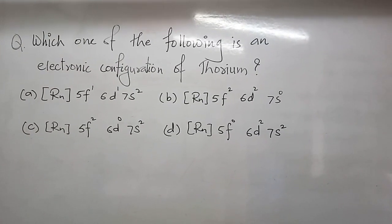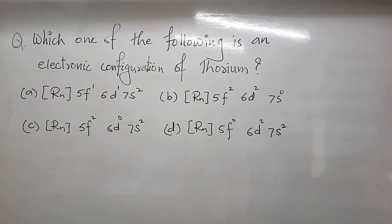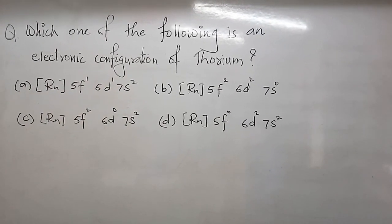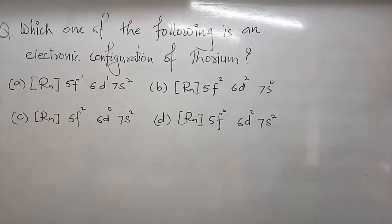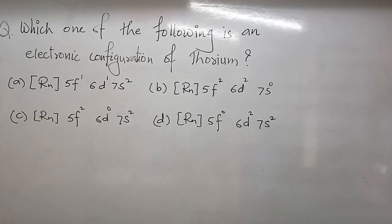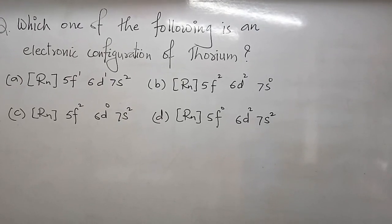Which one of the following is an electronic configuration of thorium? Now the right option of this question is D, that is Rn 5F0 6D2 7S2. This is first multiple choice question.